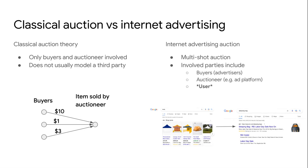In internet advertising auctions, this is not true. While there are still buyers — usually the advertisers — and an auctioneer — the ad platform — there is also a third party involved, which is the user. A user might make one search query and, based on their experience, perhaps issue another query. So the mechanism design problem for a single round should take into account that whatever happens in this round may have an effect on the next round.